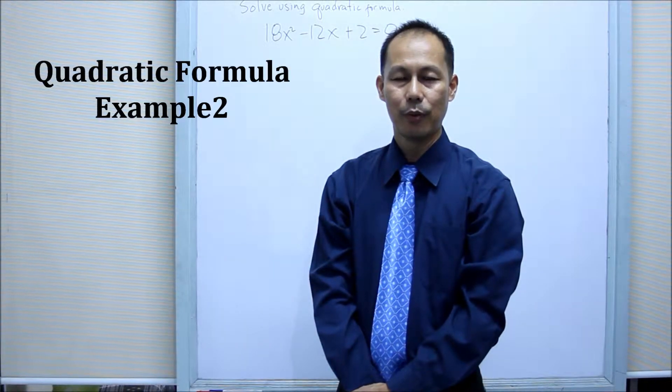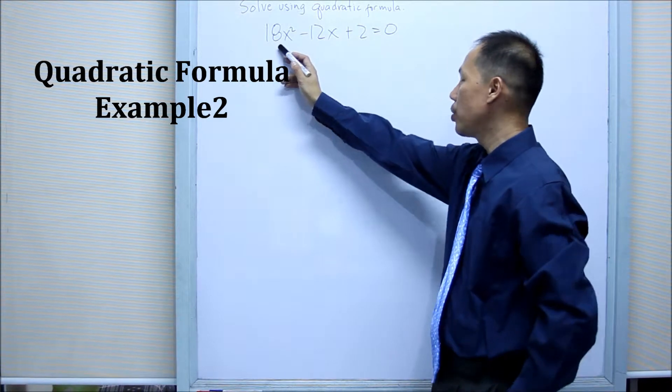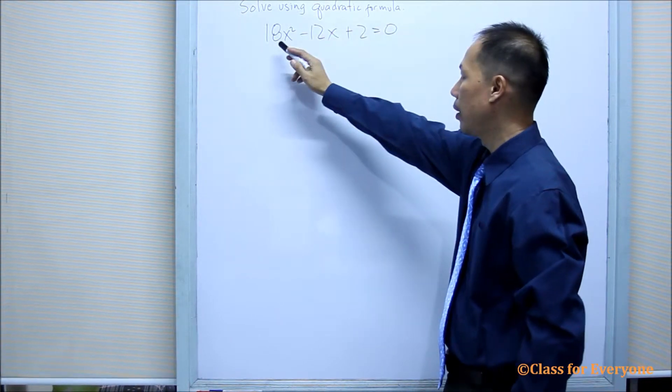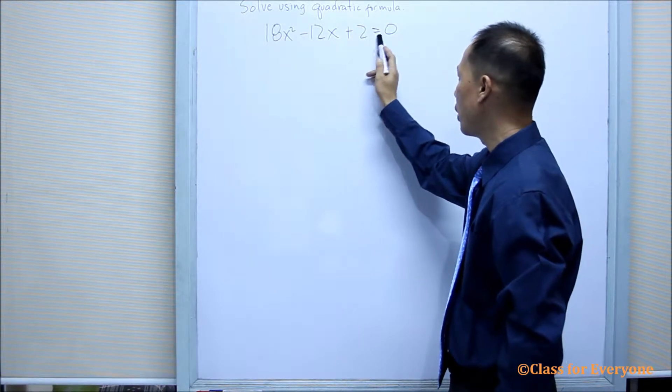Let us have another example wherein we are going to solve another quadratic equation using quadratic formula. 18x squared minus 12x plus 2 equals 0.